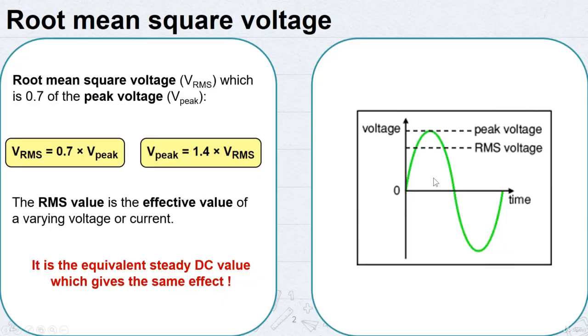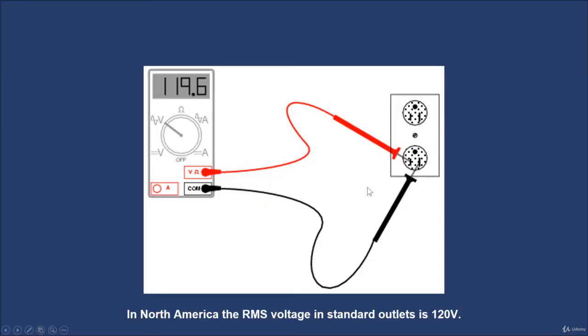Now the question is, if you have a voltmeter or a multimeter for example, and you want to check the AC voltage of your outlet, will your multimeter show the peak voltage or the RMS voltage? Well, your voltmeter, when it is positioned on the AC and not DC, will always show you the RMS value.